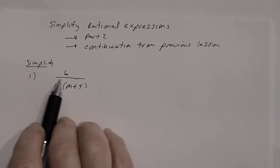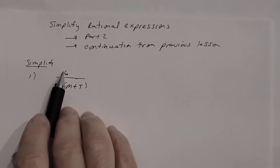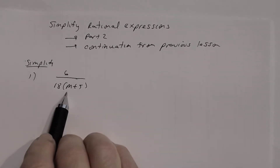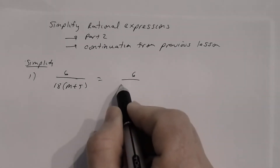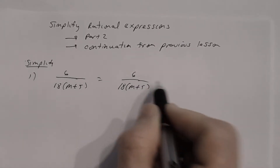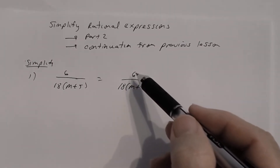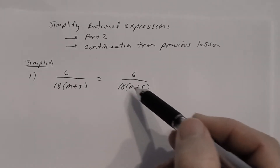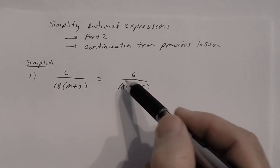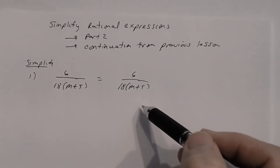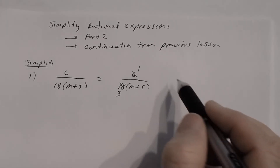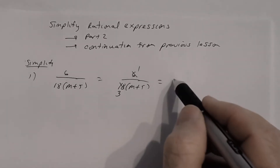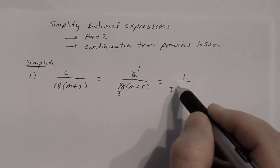For number one, the numerator is a monomial — it's already been factored, so step one is done. For step two, reduce: the numerator has a factor of 6. The denominator has two factors: 18 and (n + 5). Six goes into 18 three times, so we get 1 divided by 3 times (n + 5).